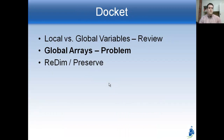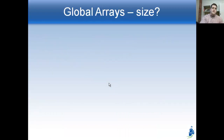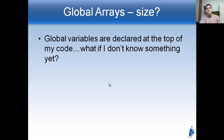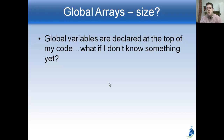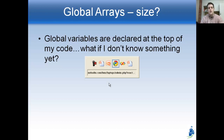I want to think about how that applies to global arrays. Declaring an array is just like declaring a regular variable, but we have this problem: if you declare a global variable at the top of the code, you might not know how big the array should be yet. Let me show you an example of what I mean by that.